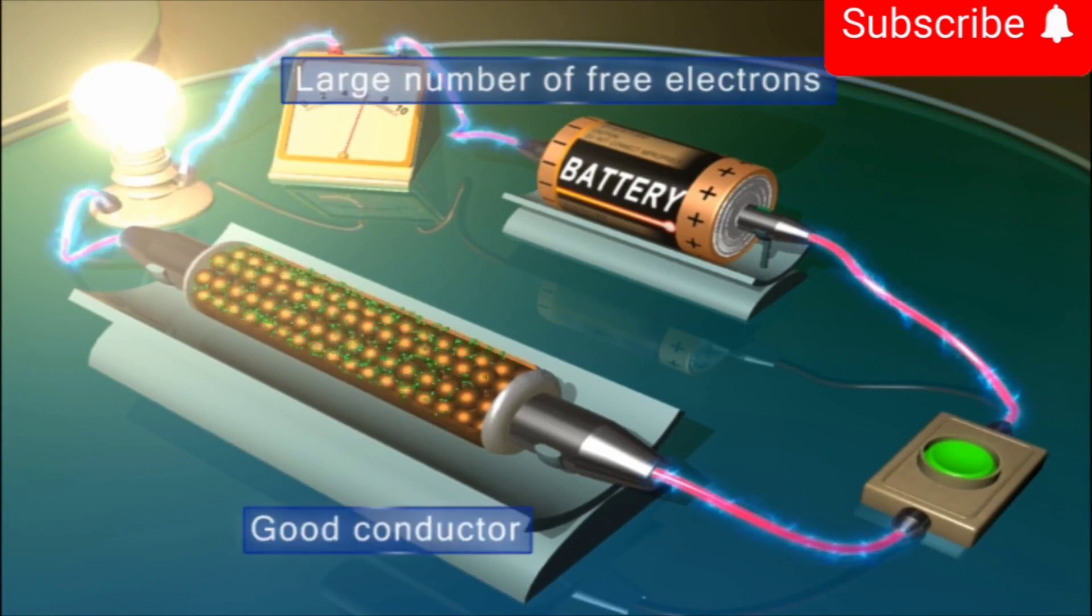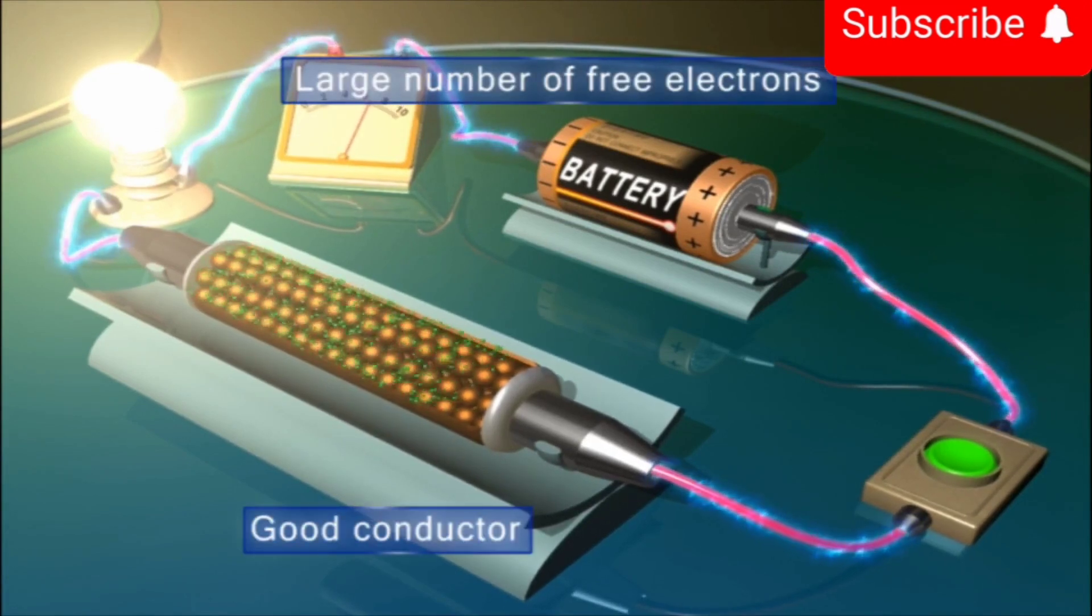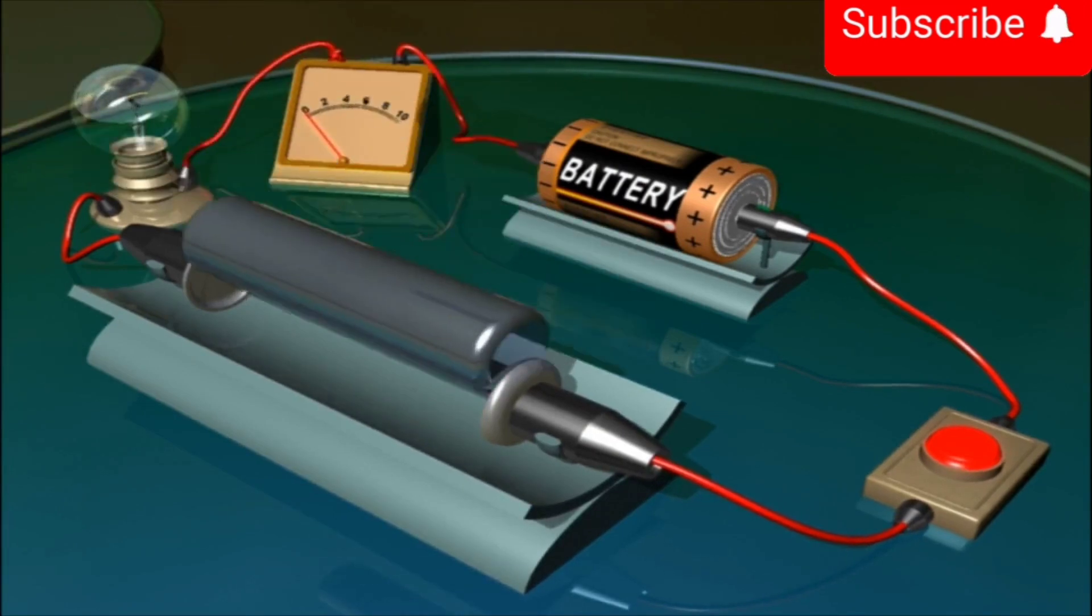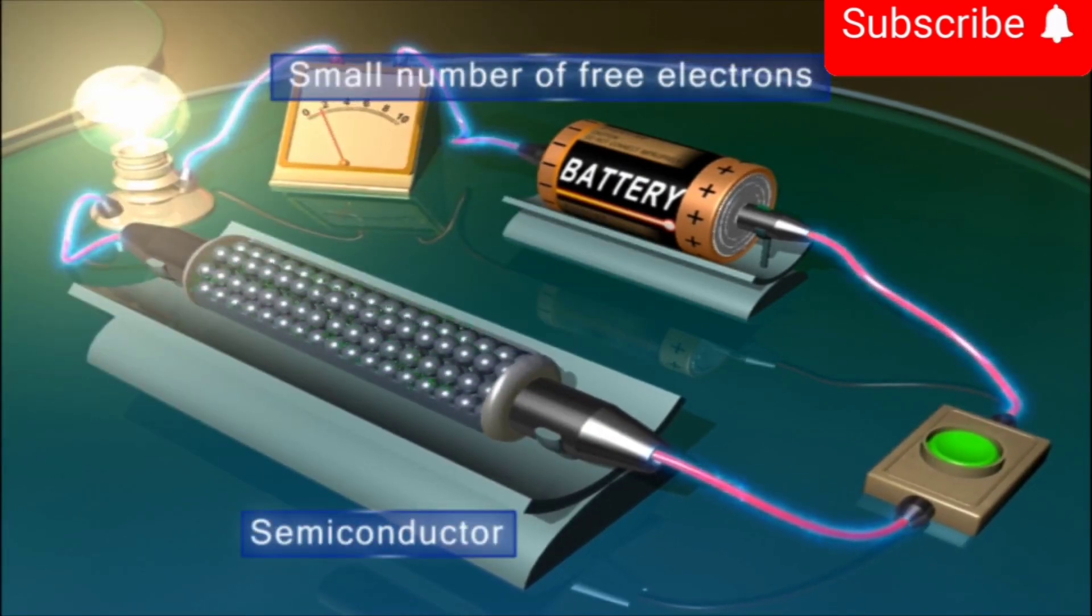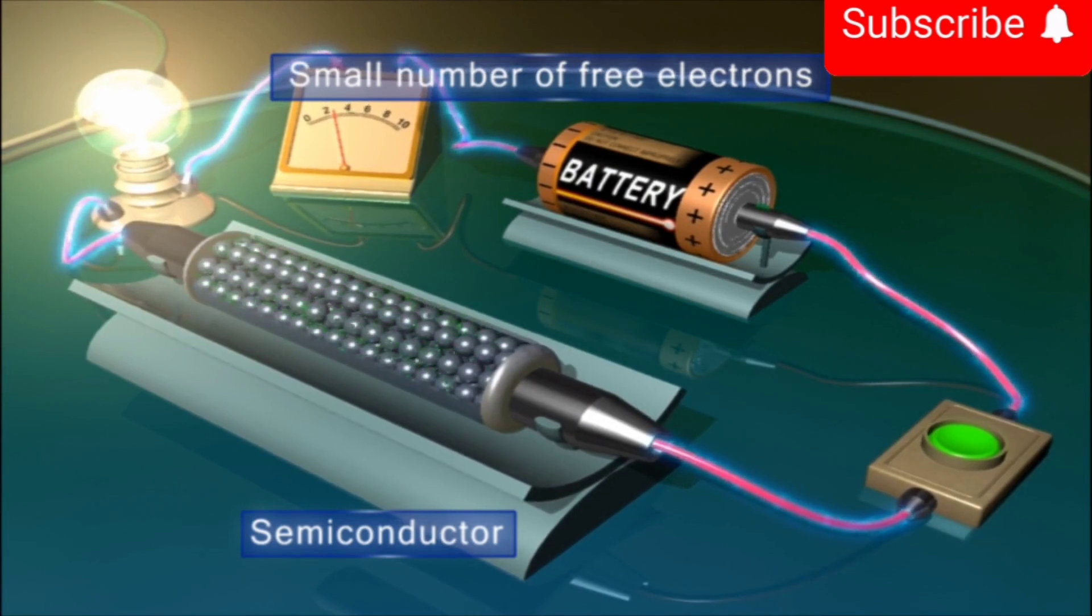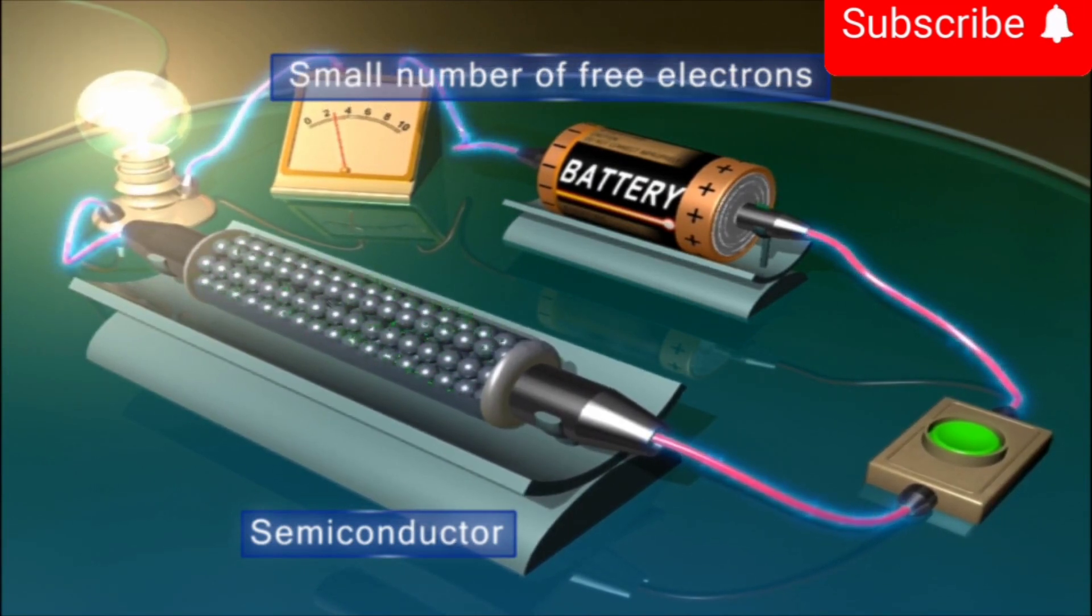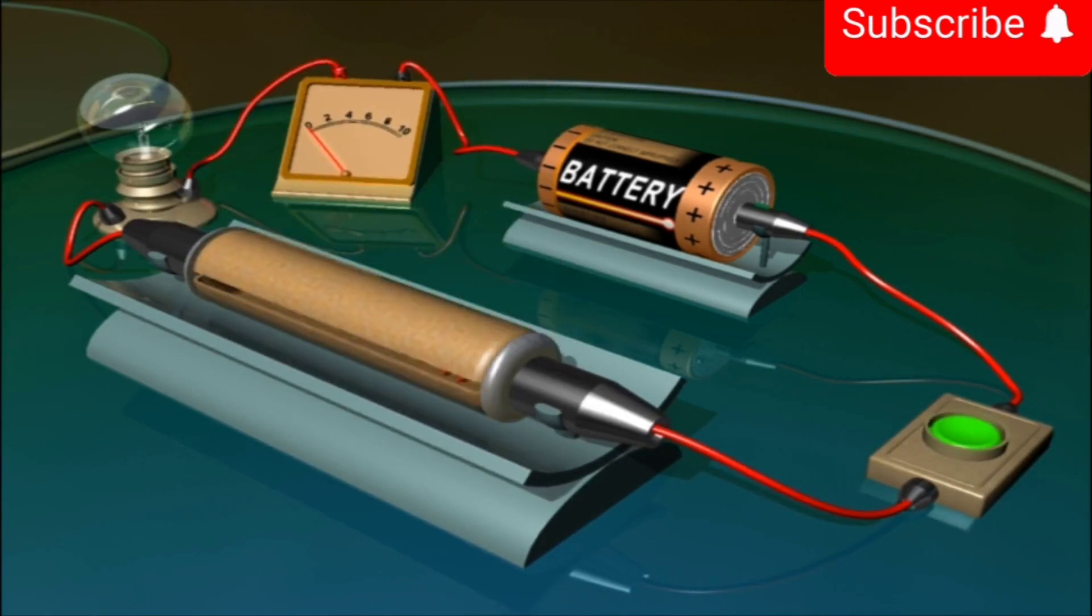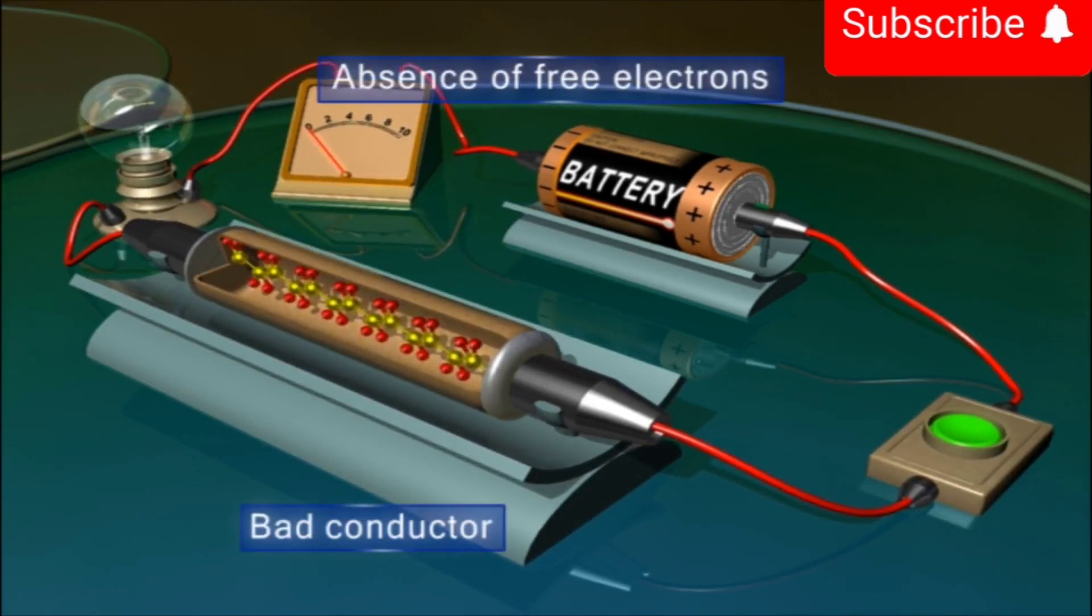In summary, the presence of a large number of free electrons makes a substance a good conductor, while the presence of a small number of free electrons in some substances allows only a little conduction of current. These substances are called semiconductors. The absence of free electrons in a material makes it a bad conductor.